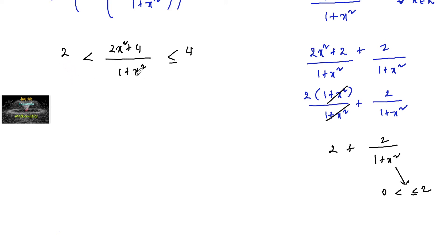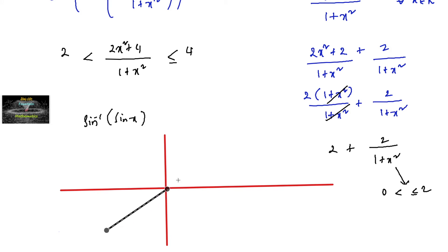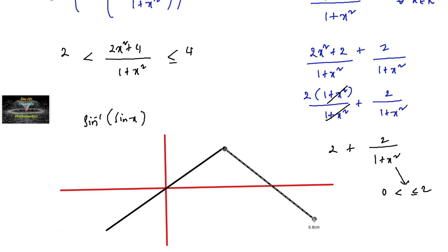So (2x²+4)/(1+x²) lies between 2 and 4. Now let's look at the sin⁻¹(sin x) graph. On this graph, we have y=x and y=π−x as the two relevant pieces.